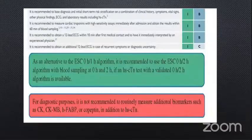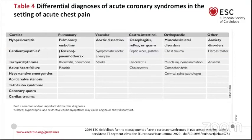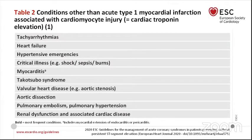The differential diagnosis of patients presenting with chest pain is very broad, including cardiac, pulmonary, vascular, gastrointestinal, and other conditions. Conditions other than acute type 1 MI that can be associated with elevated cardiac troponin include tachyarrhythmia, heart failure, hypertensive emergency, critical illness such as shock and sepsis, myocarditis, Takotsubo syndrome, valvular disease, aortic dissection, and pulmonary embolism.